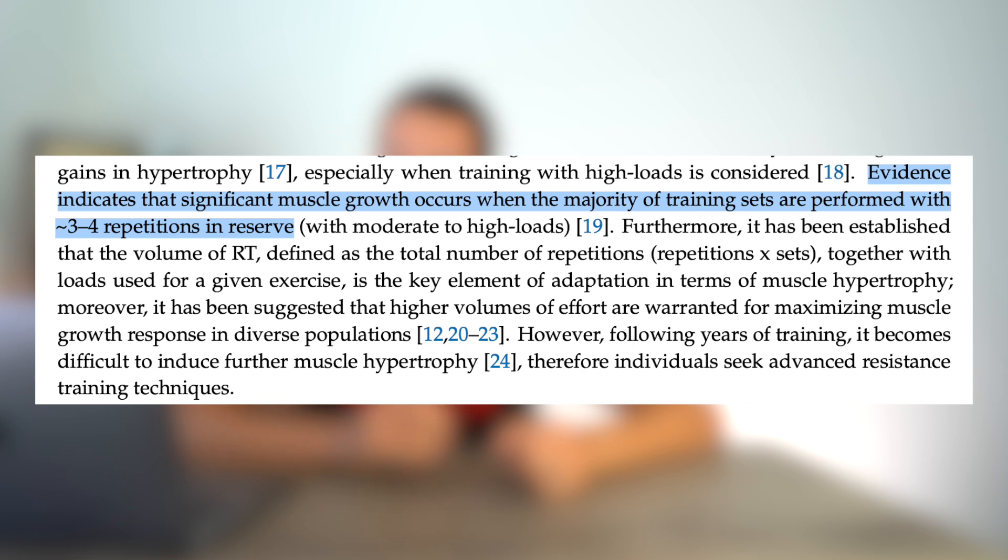We can't use low load and stop at 10 reps when we could have done 30 — that's just junk volume. Significant muscle growth occurs when the majority of sets are performed with three to four repetitions in reserve, meaning the exercise could only be performed for about three to four more reps before failure, roughly equivalent to an RPE of 6–7. Hypertrophy training requires higher volumes than strength training, but we should stay about three to four reps from failure rather than going all the way to failure, while also not loading so light that it isn't challenging.